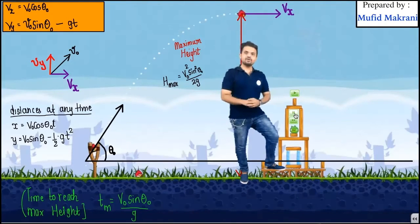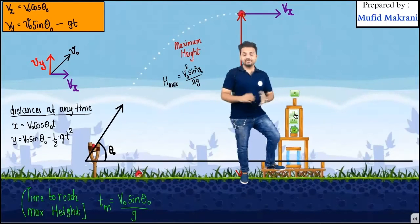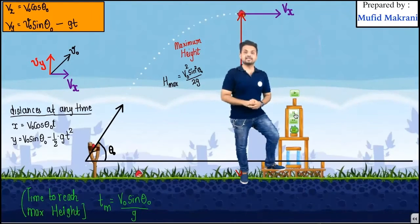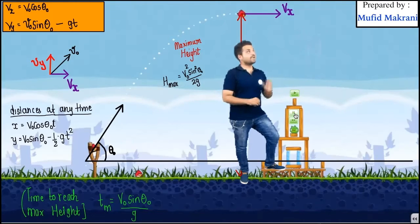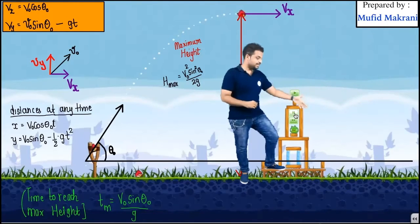Now the time taken to reach this maximum height is given by the formula tm is equals to v naught sine theta naught by g. Now as soon as I'll resume the motion, my projectile will complete its motion and it will come to the ground.